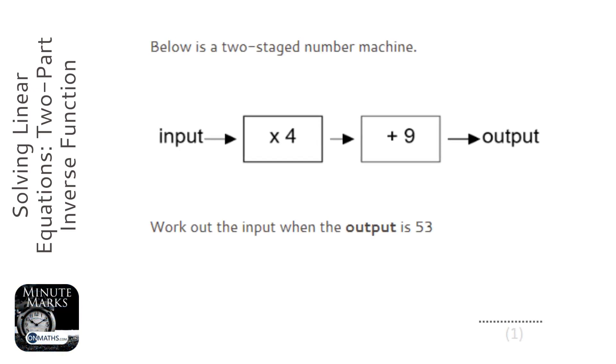Okay, so we're given a number machine. The number machine has an input, then we times it by 4, then we add 9 and then it has an output.